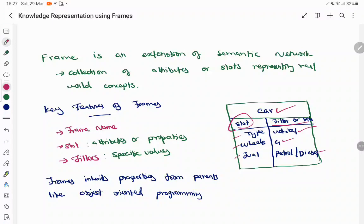What exactly happens is you have a lot of frames and all the frames are connected in a hierarchical pattern, and the children node will be inheriting the properties of the parental node.